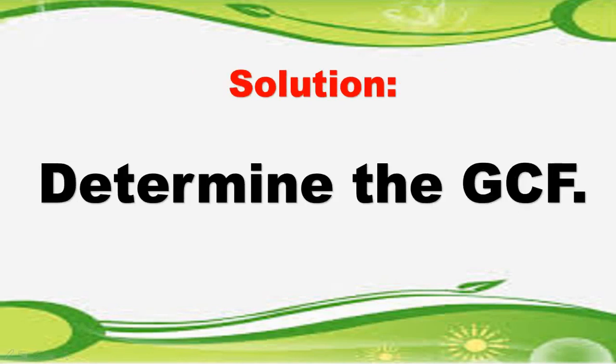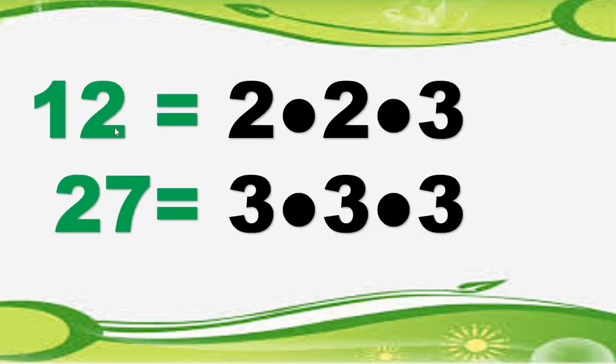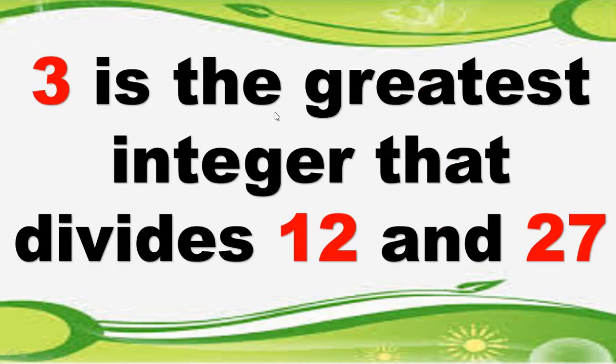What's the first step? Determine the GCF or the greatest common factor. Remember, the greatest common factor is the greatest number or integer that divides evenly into all numbers with zero remainder. Let's go back with the problem again: 12x cubed plus 27x squared. Let's focus on the constant or the numerical coefficient of x cubed and x squared, and that is 12 and 27. Let us use the prime factorization to get the GCF of 12 and 27. 12 is equal to 2 times 2 times 3, and 27 is equal to 3 times 3 times 3. Now take a look: 3 is common to 12 and 27. So therefore, 3 is the greatest integer that divides 12 and 27.